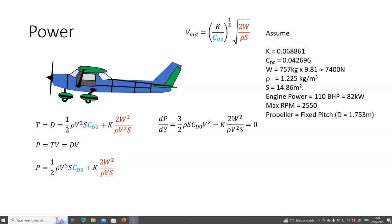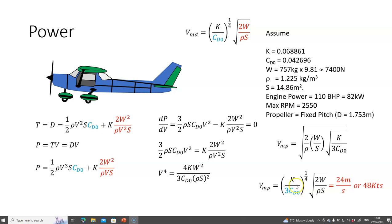If I differentiate that with respect to v to get the minimum power, and then solve for v, I will get the velocity of minimum power equals K over 3 CD0 to the power of a quarter, square root of 2W over rho S. When I put the values in, I get 24 meters per second or 48 knots.